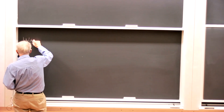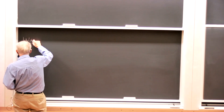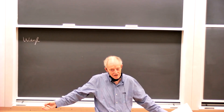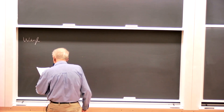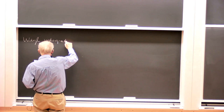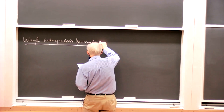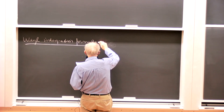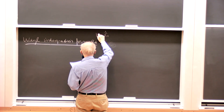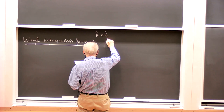So let me just, for completeness, state the Sato-Tate conjecture that has been proved — what does it actually say explicitly? For this, we'll just recall the Weyl integration formula. So we've got a group G-hat, and maybe I'll do it over here.